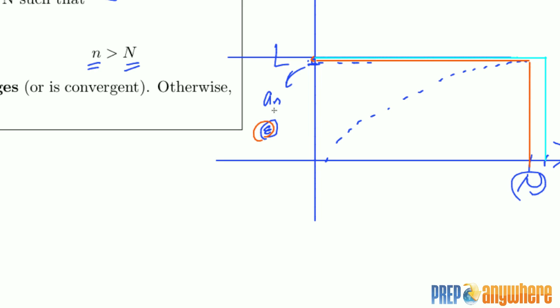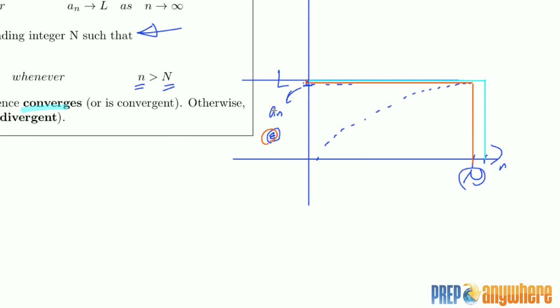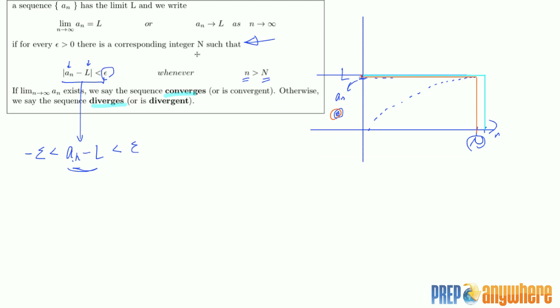sequence is converging to L. So it converges. We say it converges if the limit approaches a particular number. Otherwise, we say it diverges, whether it goes to infinity or it's undefined. We just say it's diverging.